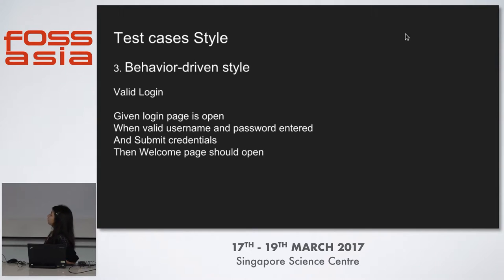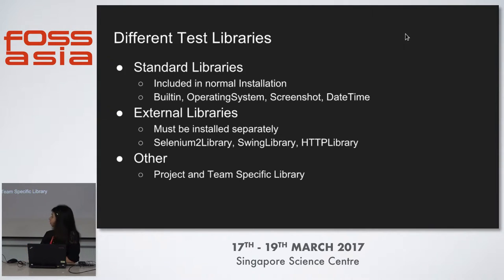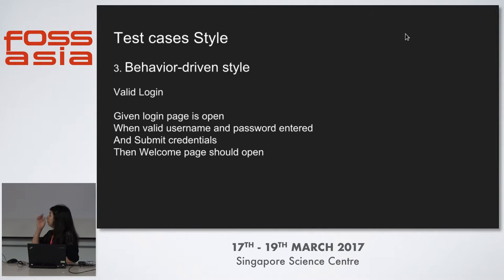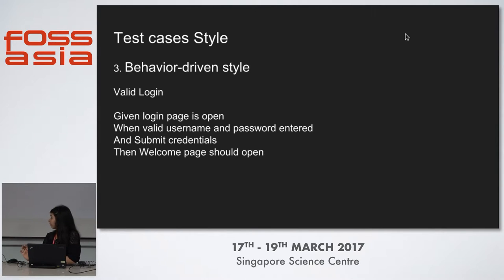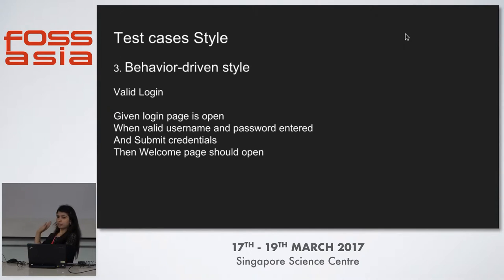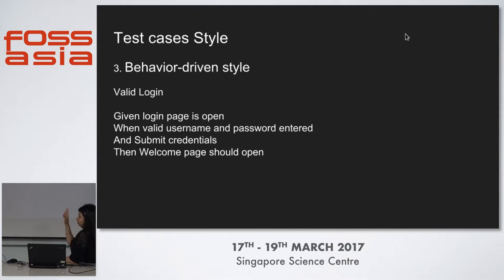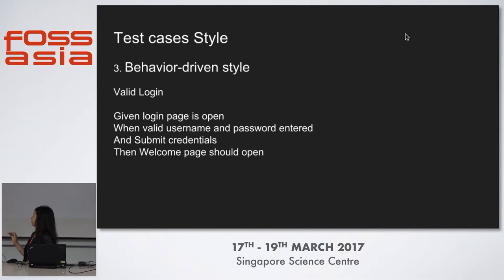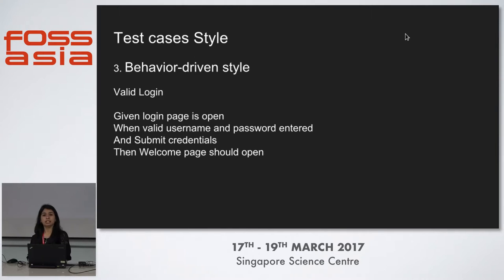Next is behavior driven style. This style is used when we need to communicate requirements to non-technical stakeholders. It uses a simple given-when-then syntax. In 'given' we specify the condition — like 'given login page is open'. 'Then' is the expected result, the outcome of the test. So: given the login page is open, when we enter a valid username and password and submit credentials, then the webpage should open. This is the Gherkin style, used by BDD — behavior driven development.